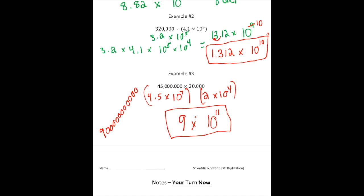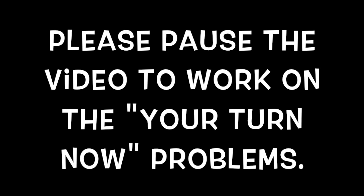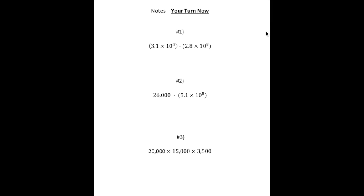Now it's your turn. Turn the page and try these problems on your own, and then when you're done, you can see how you did. Good luck. Welcome back — let's see how you did. When you multiplied 3.1 times 2.8, that gives you 8.68, and when you multiplied 10 to the fourth power times 10 to the eighth power, that gives you 10 to the 12th power. That's written in scientific notation, so you're all set.